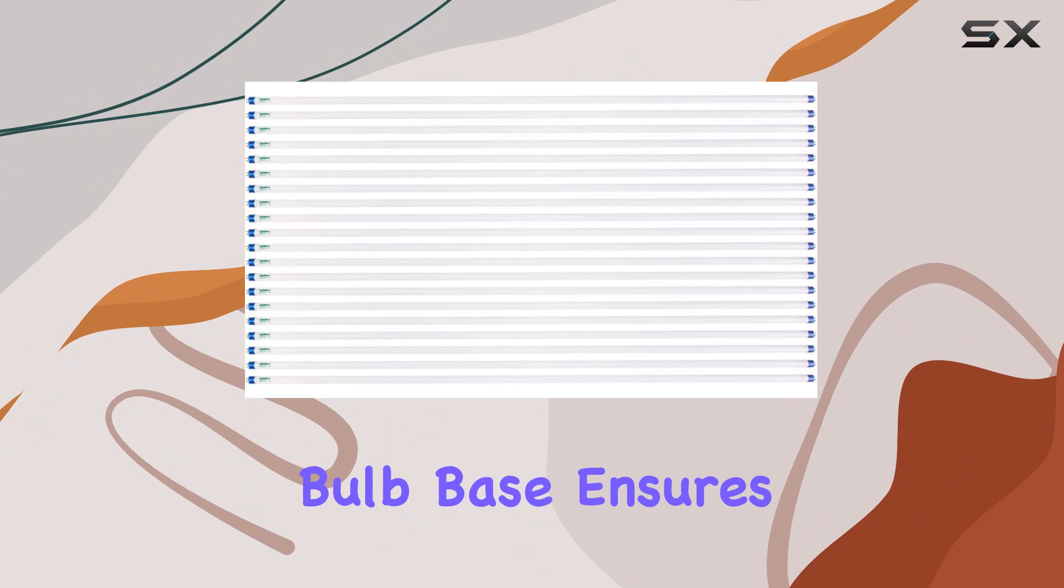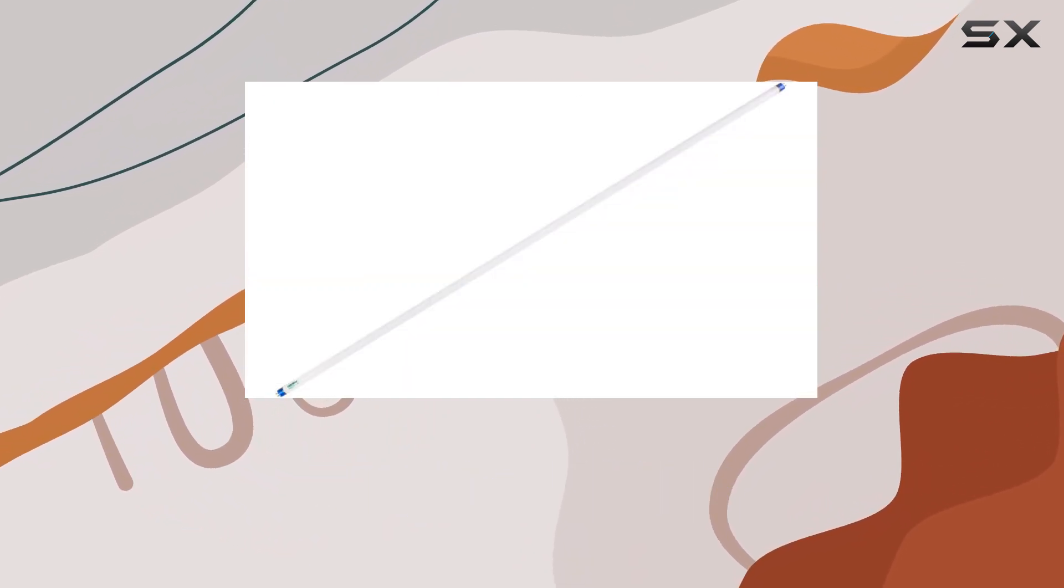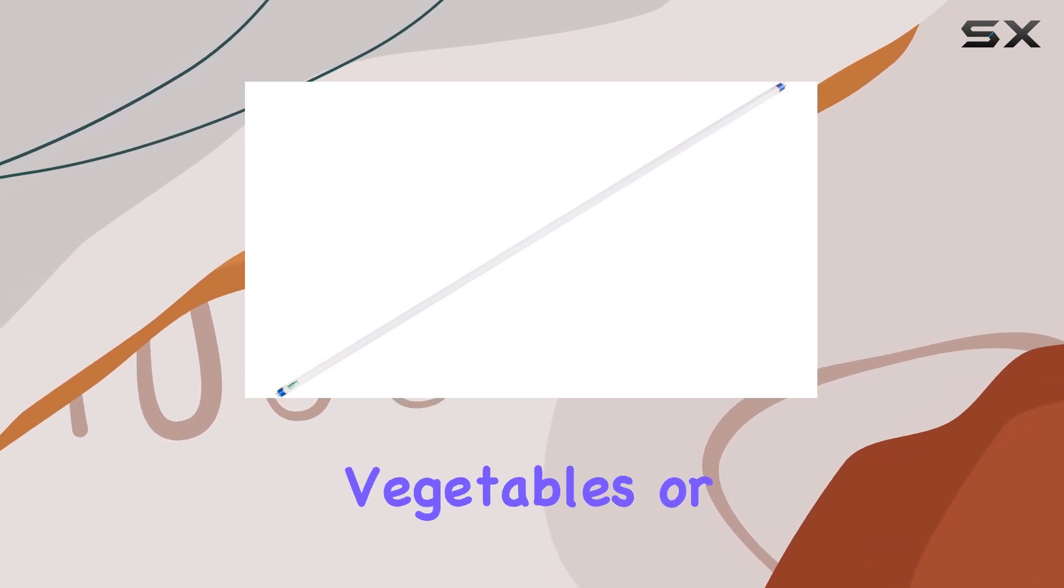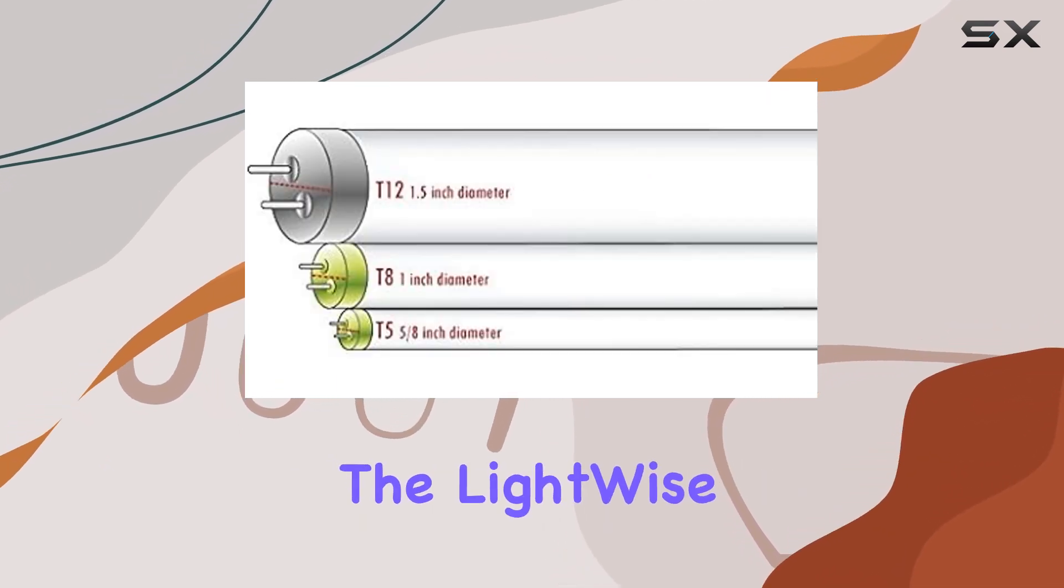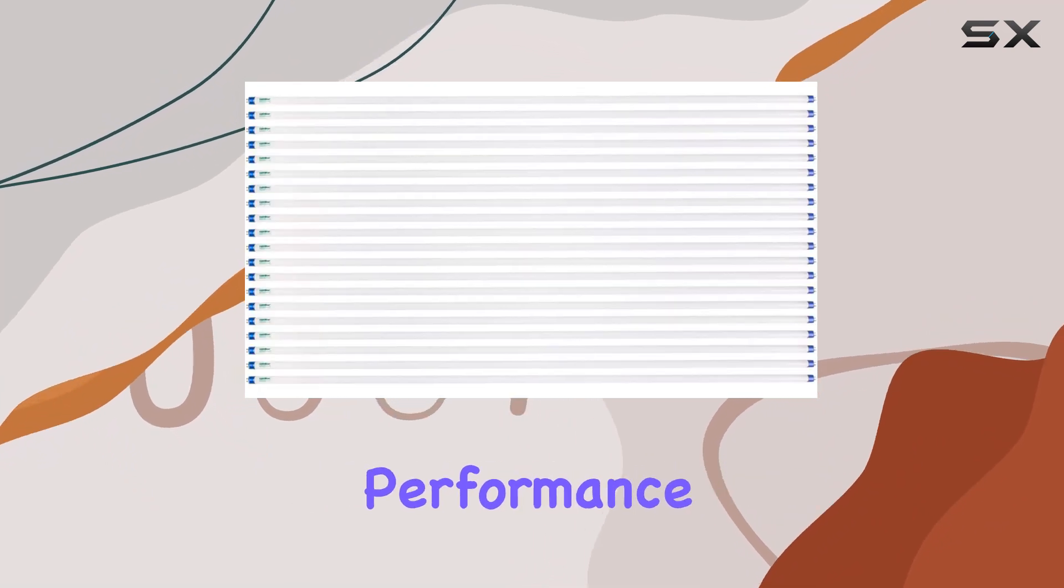The G5 bulb base ensures easy installation and compatibility with a wide range of setups. Whether you're nurturing herbs, vegetables, or ornamental plants, the LightWise 54WT5HO bulbs deliver consistent performance and reliability.